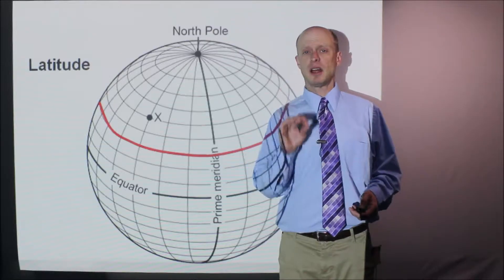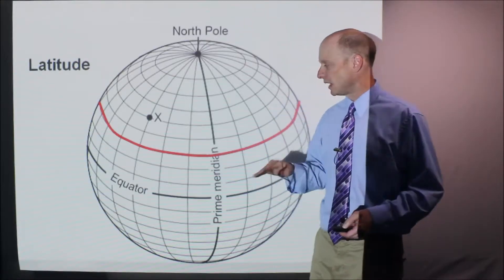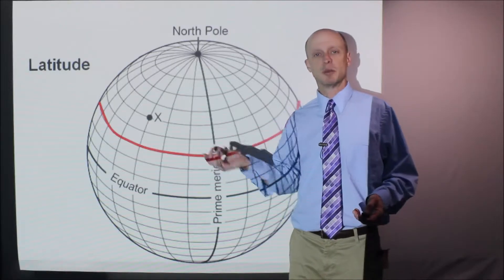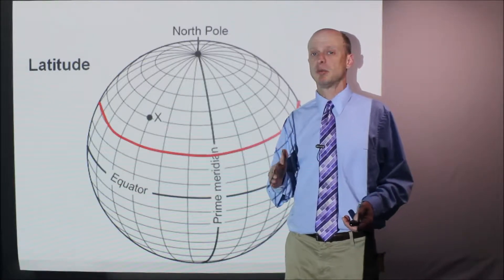As opposed to the line of latitude is this red line here and it goes like this. Knowing which is which is important and then working with the numbers and compass directions is really important.